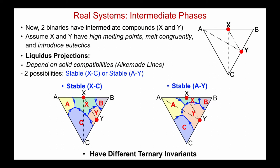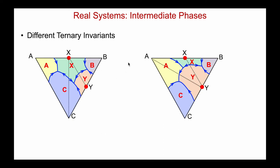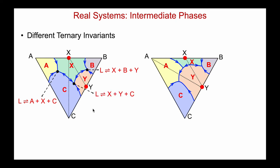Let's go to the situation on the left where I had a stable XC Alcamadi line. This first ternary invariant is definitely a eutectic — all arrows coming in. It's liquid in equilibrium with A plus X plus C. The one on the top right: liquid in equilibrium with X, B, and Y. And finally, this one down here is liquid in equilibrium with X, Y, and C. Now going to the diagram on the right, the upper right ternary invariant has all arrows coming in — so this is a ternary eutectic: liquid in equilibrium with X plus B plus Y.